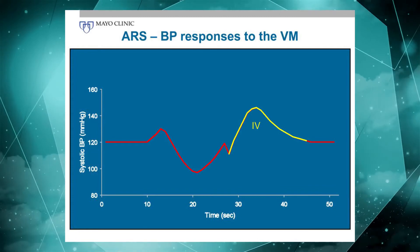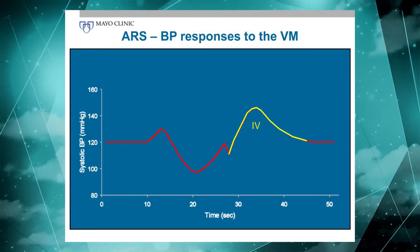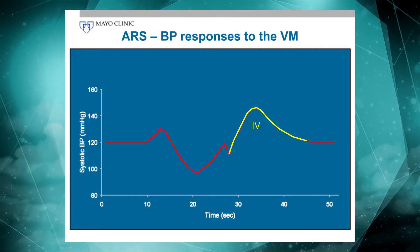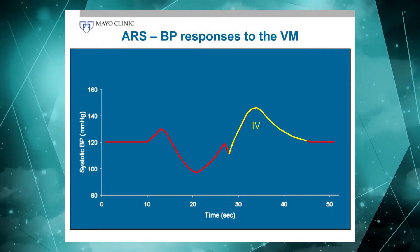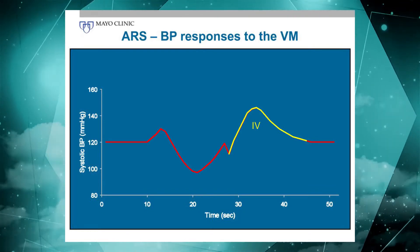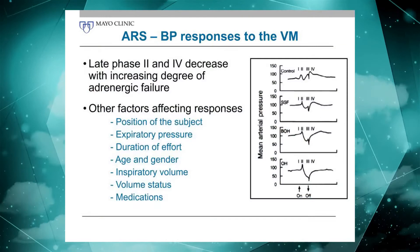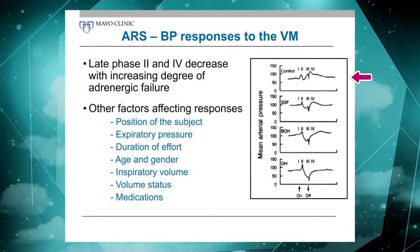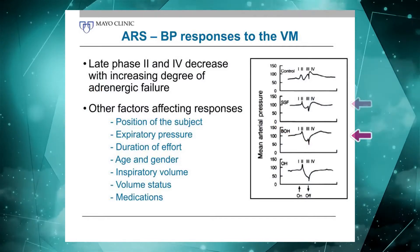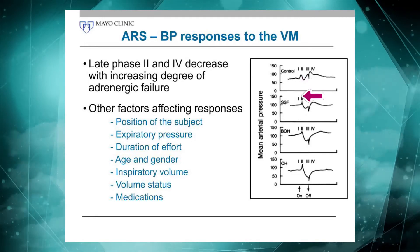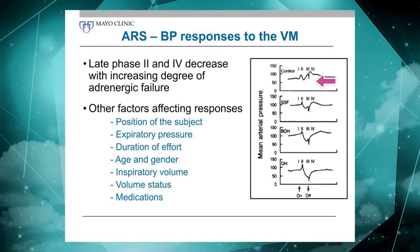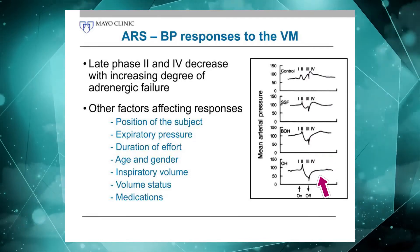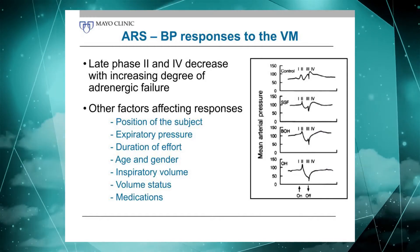To summarize, the two components of the Valsalva maneuver we're really interested in are late phase two and phase four — those two reflect adrenergic function. With progressive adrenergic impairment ranging from mild to moderate to severe, you can see late phase two disappear, and phase four disappear as well, becoming a slow, passive return to baseline rather than an overshoot.